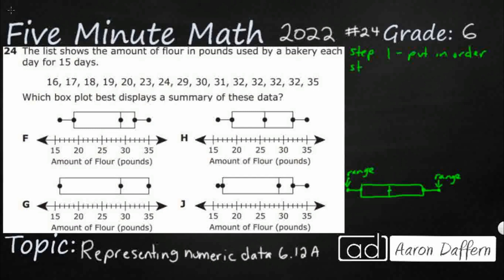So that's going to be the lowest number and the highest number. So we could say step 2, find the range. Well, if you've got them in order, it's super easy. Lowest number is 16. Highest number is 35.